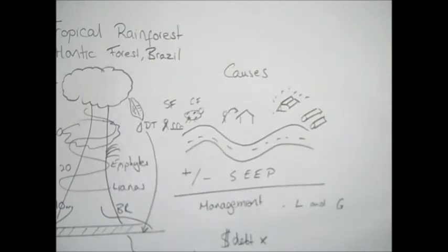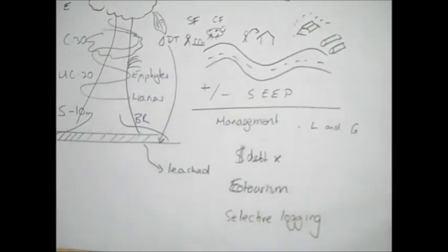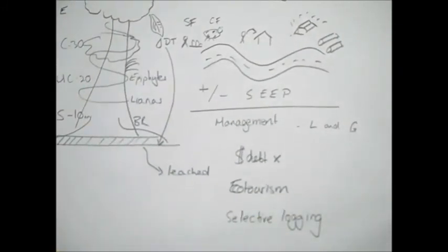And then one final strategy that hasn't been so successful is selective logging. So this is where only certain types of trees are cut down, the mature trees. However, it's been really not as successful as they would have hoped, mainly because when you try and cut down one tree, normally as it falls down or as you drag it out, you normally destroy around 30 other trees.